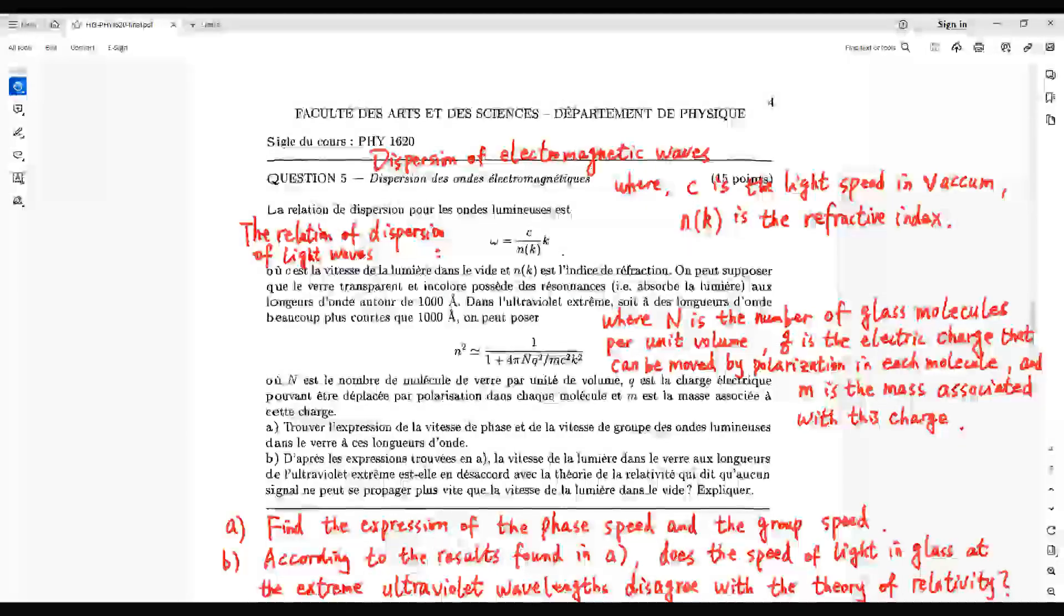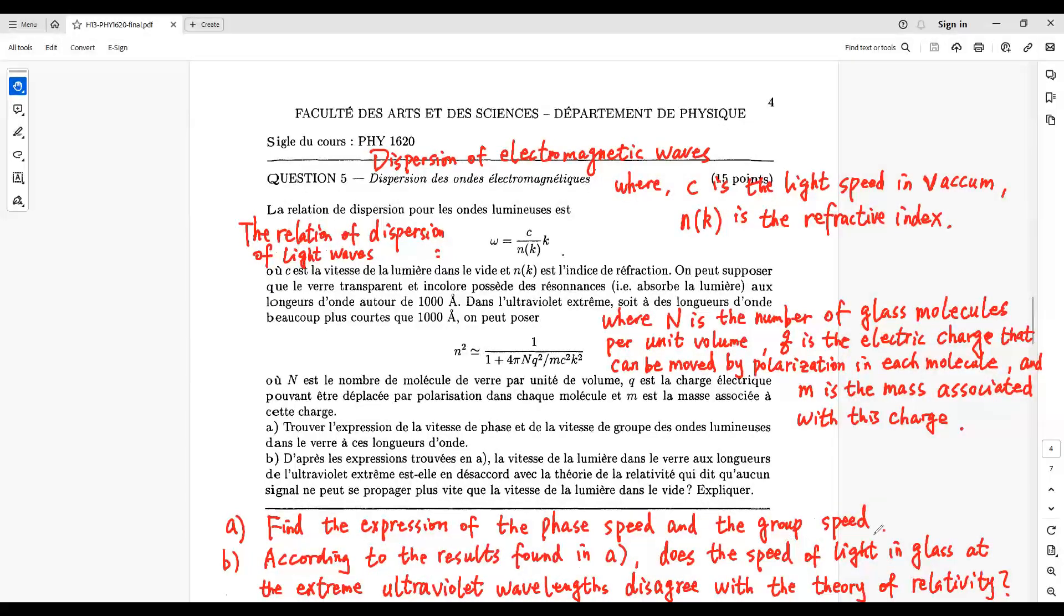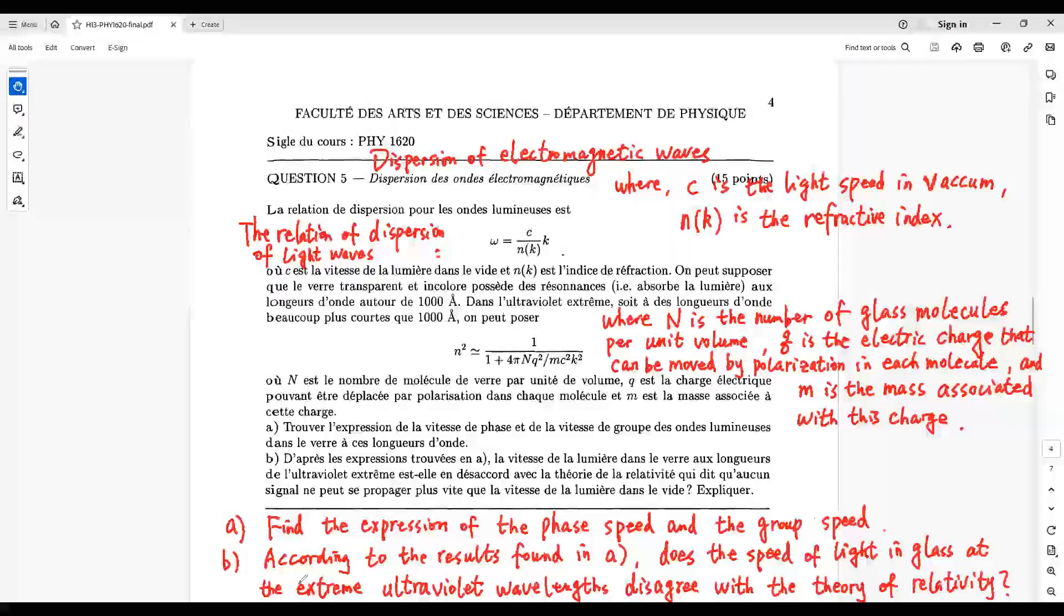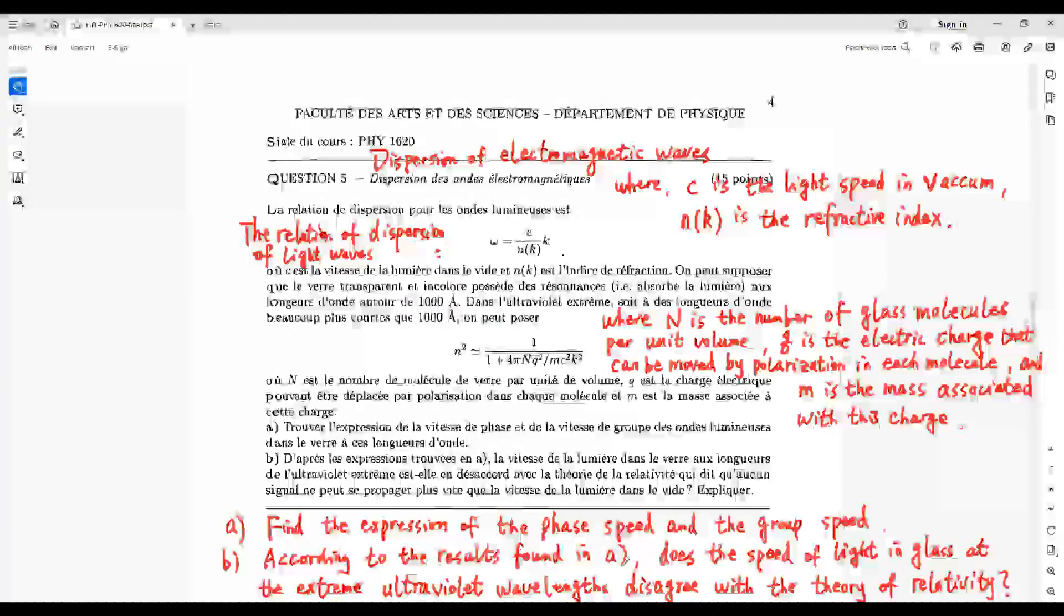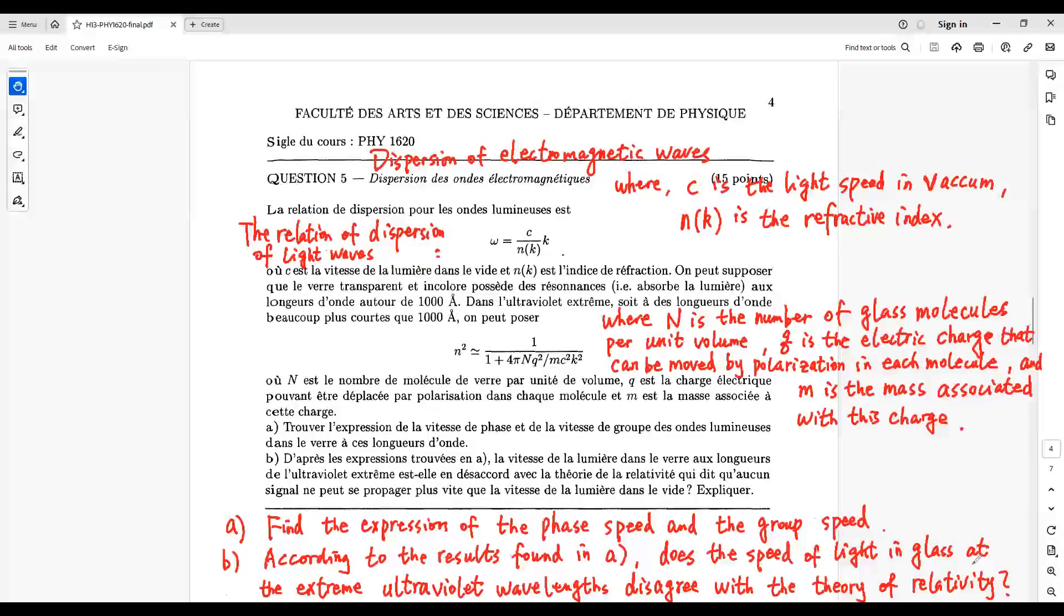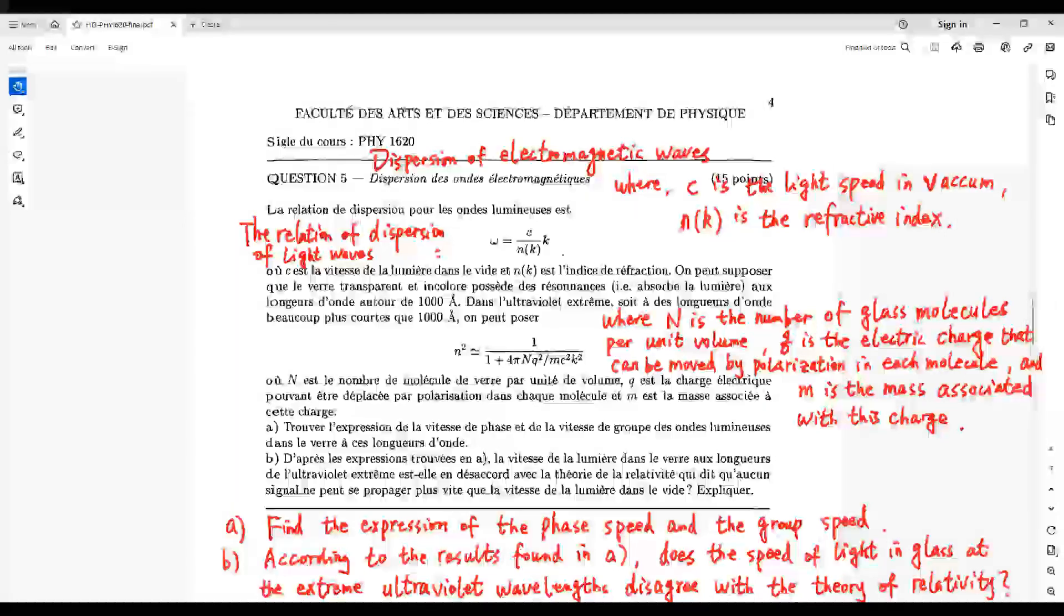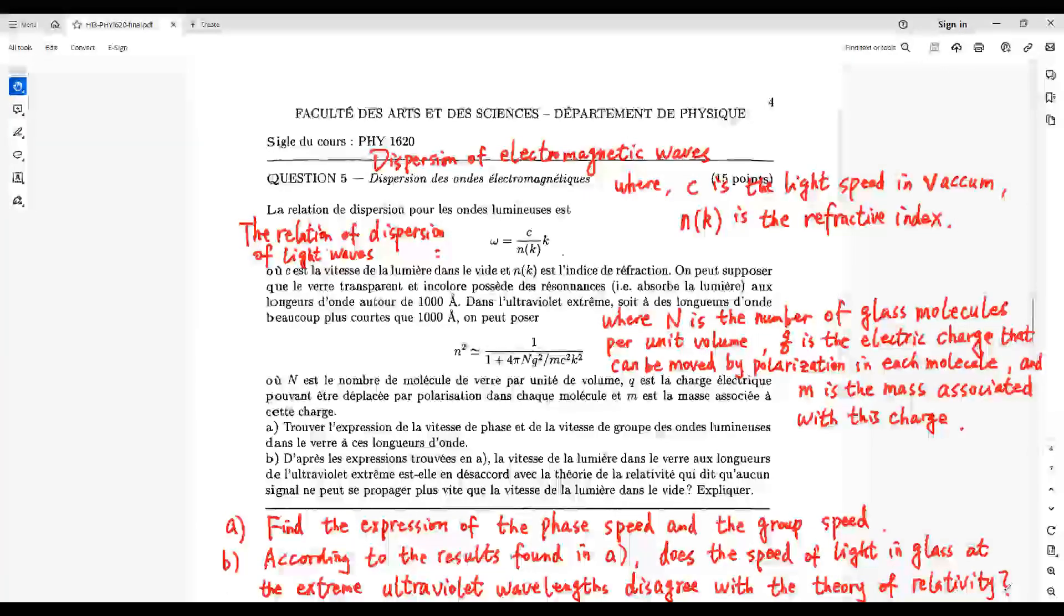Question A: Find the expression of the phase speed and the group speed for this situation. Question B: According to the results found in part A, does the light speed in glass at extreme ultraviolet wavelengths disagree with the theory of relativity?